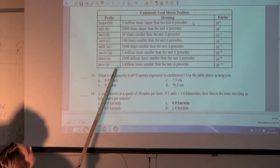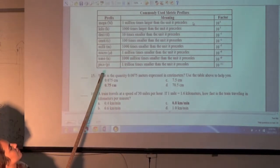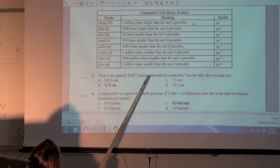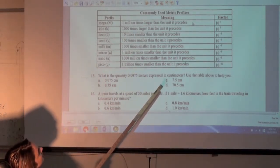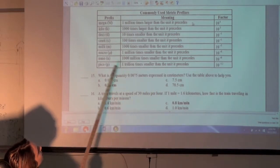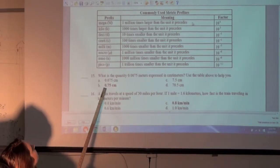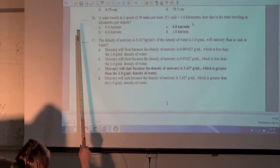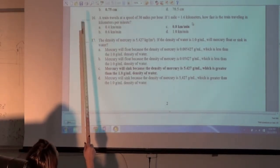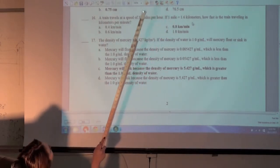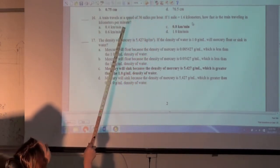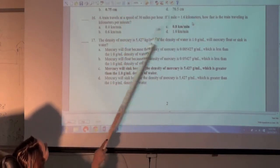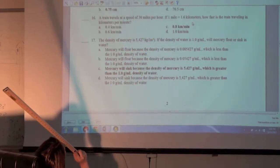What is the quantity 0.0075 meters expressed in centimeters? Use the table above to help you. B, 0.75 centimeters. A train travels at a speed of 300 miles per hour. If one mile equals 1.6 kilometers, how fast is the train traveling? C, 0.8 kilometers per minute.